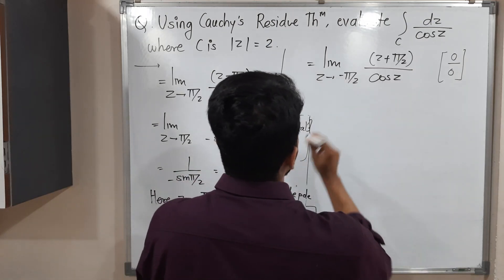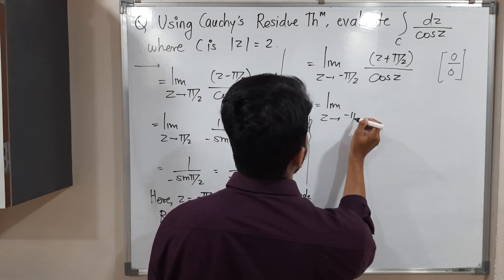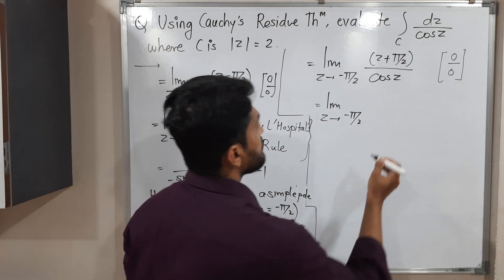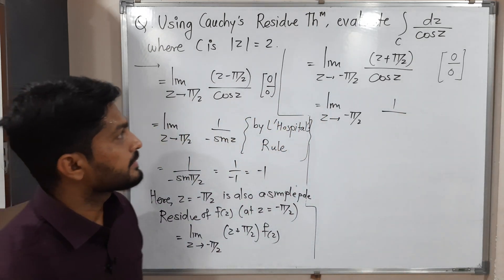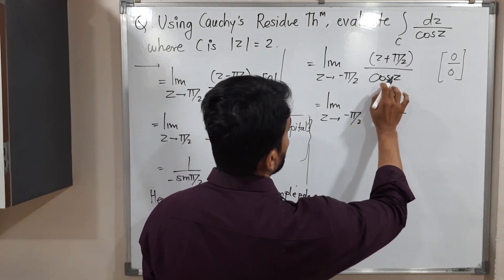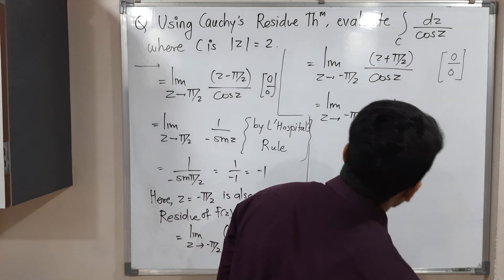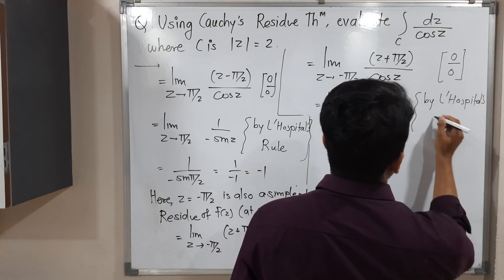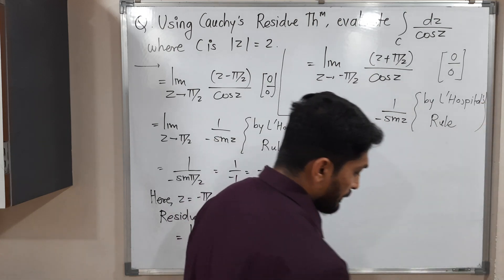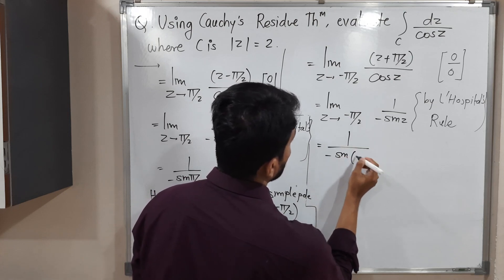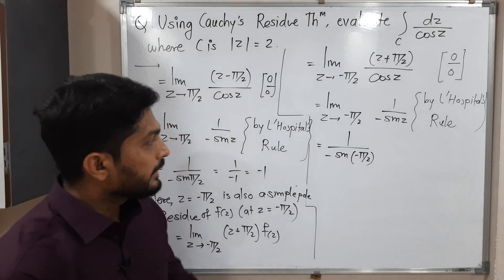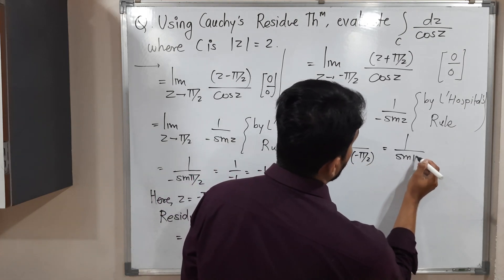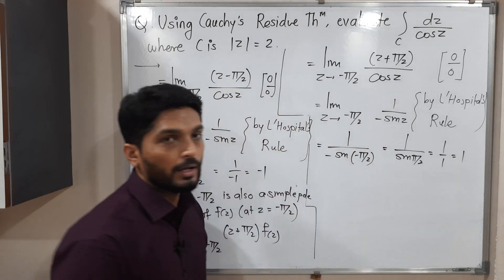By L'Hôpital's rule, we get limit z tends to −π/2 of 1 upon (−sin z). Applying the limit: 1 upon (−sin(−π/2)). Since sin(−π/2) = −1, the minus signs give −(−1) = 1 in the denominator. So 1 upon 1 = 1. The residue at z = −π/2 is 1.